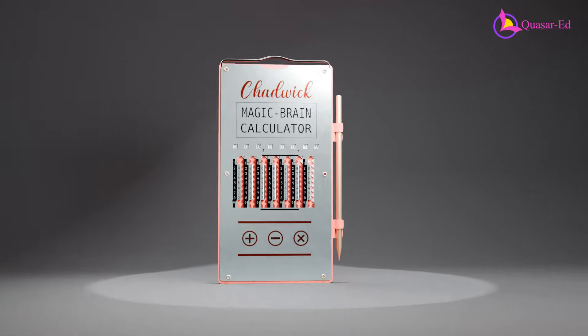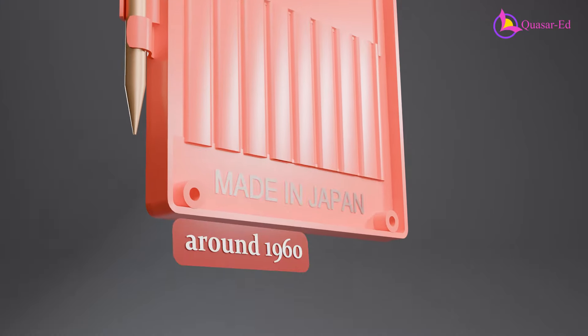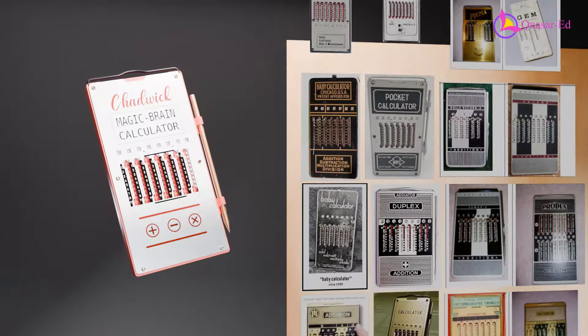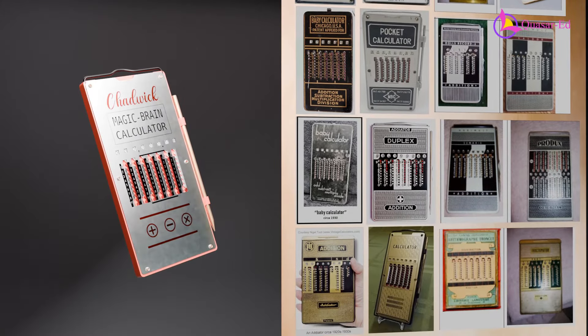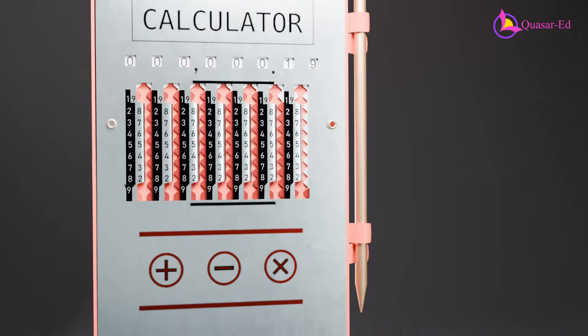This is a mechanical calculator called the Magic Brain, manufactured in Japan around 1960 by the Chadwick Company. Various companies produced many variations of this calculator. In this video, we will use this specific model to understand how it works.